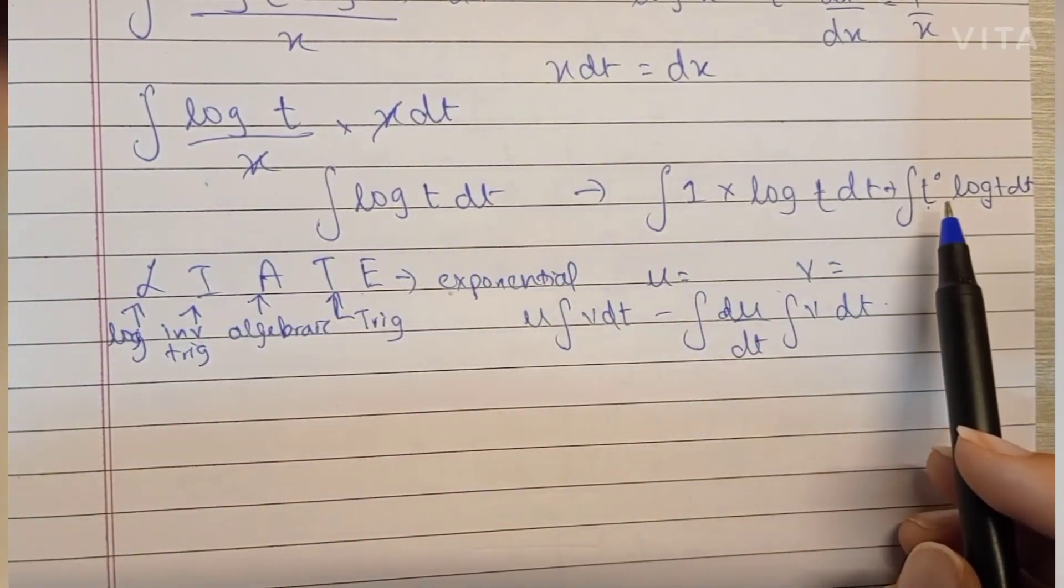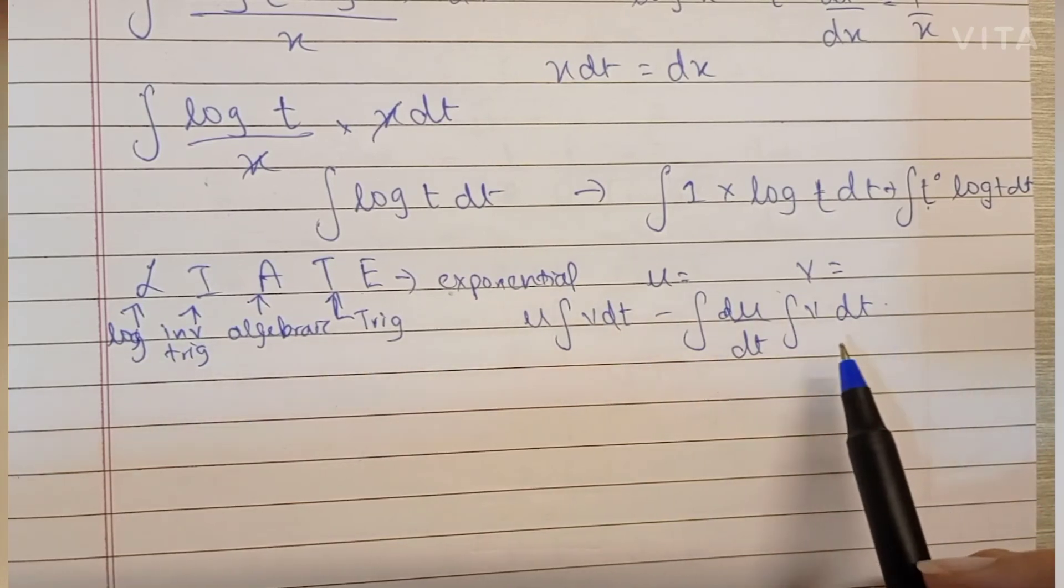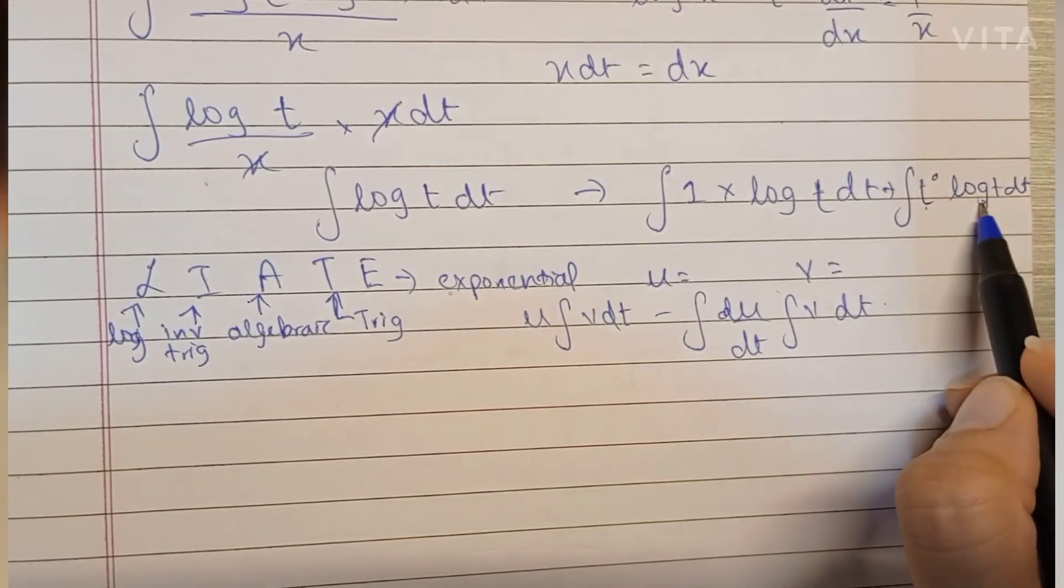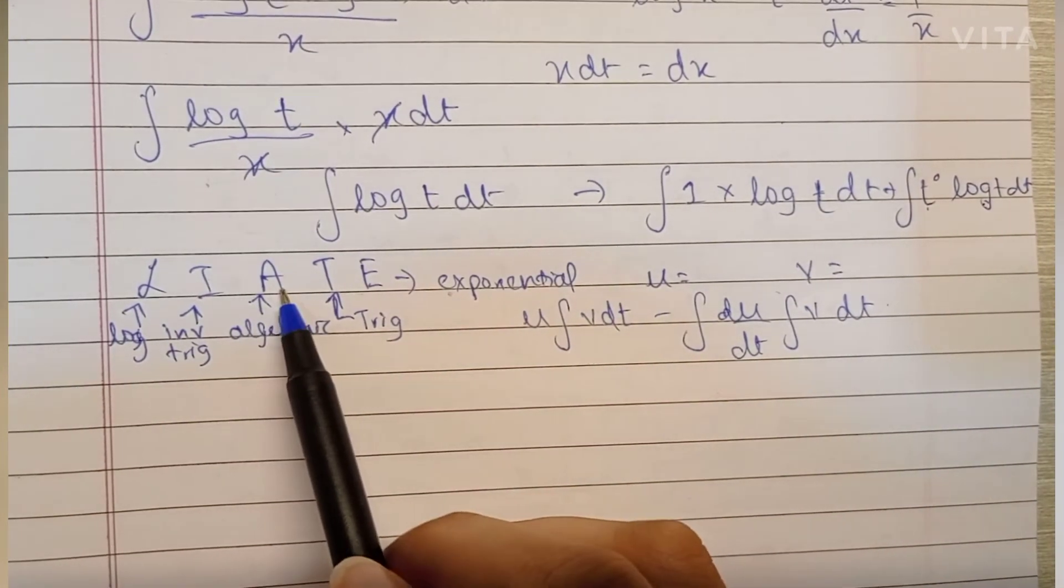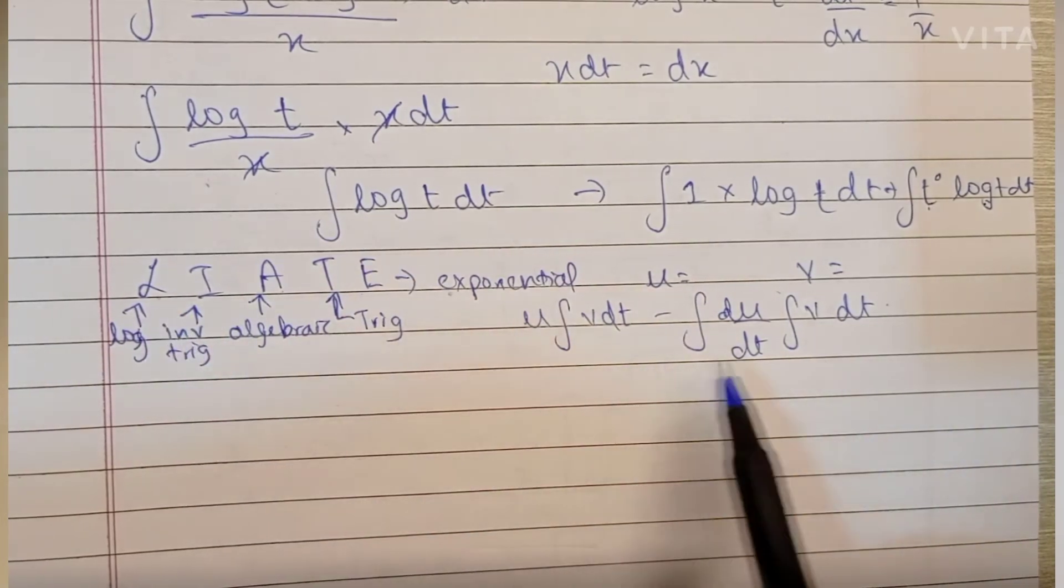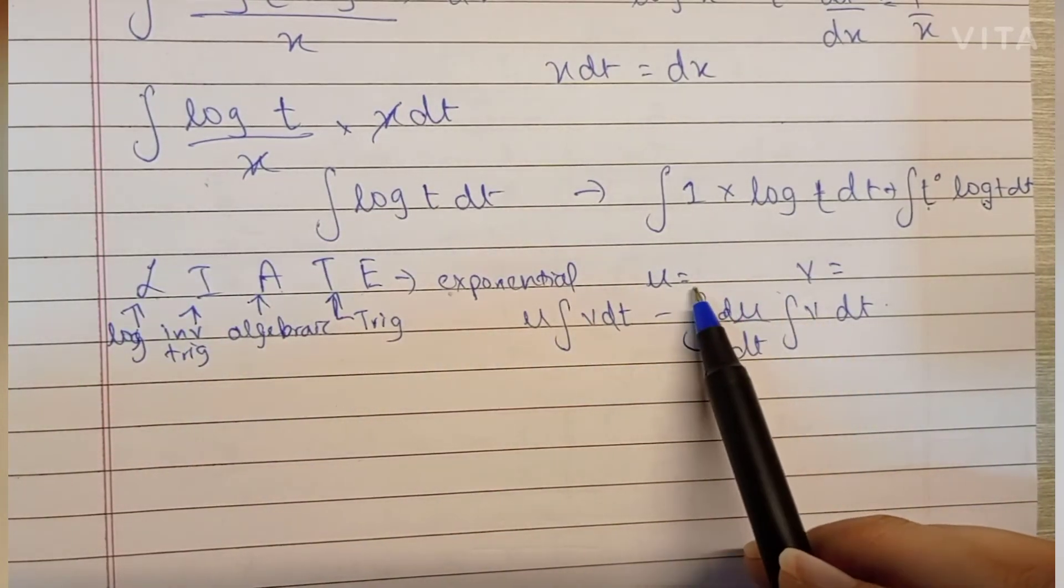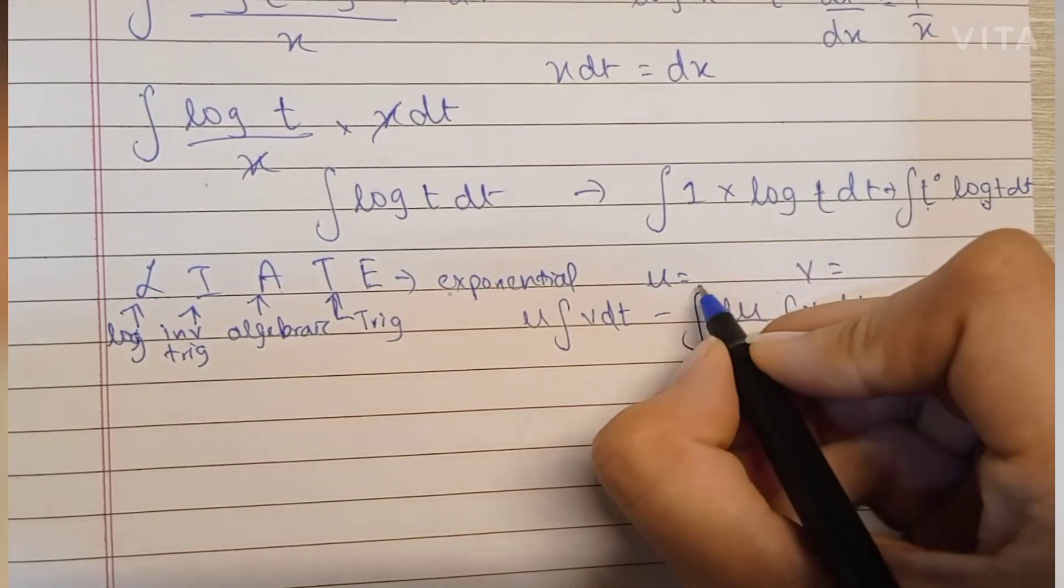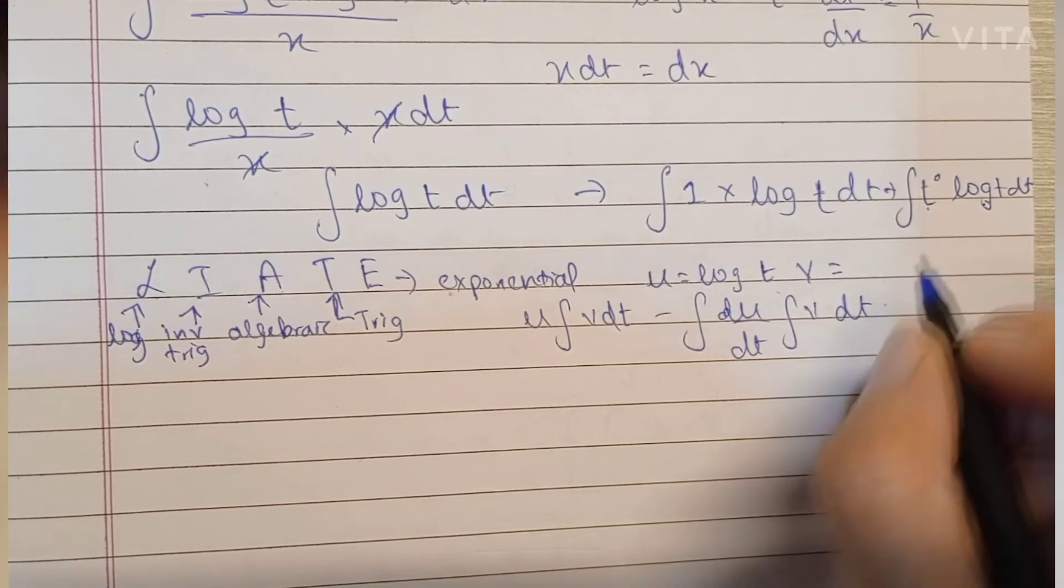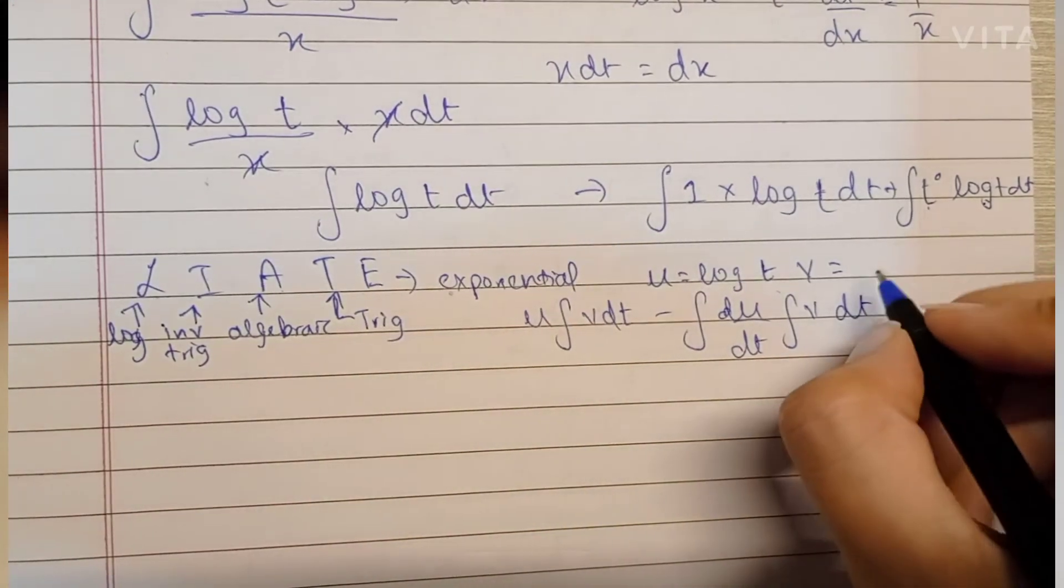ILATE is the order of preference for the first term based on which term of the integral is easier to differentiate and which is easier to integrate. The two terms are the algebraic term and the log term. Because algebraic comes after log, log will be decided as the first term, the u term. So I'll keep u as log t, and the algebraic term, t raised to 0, will be kept as the v term.